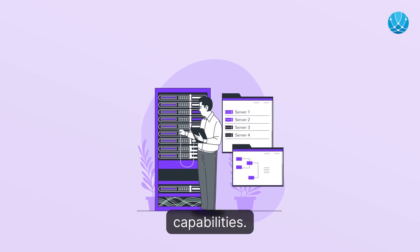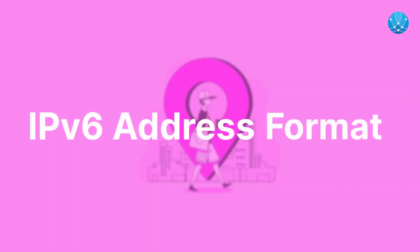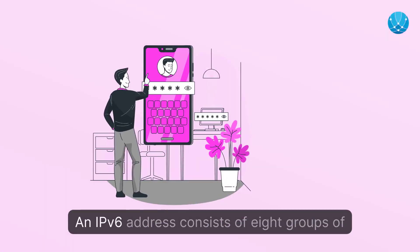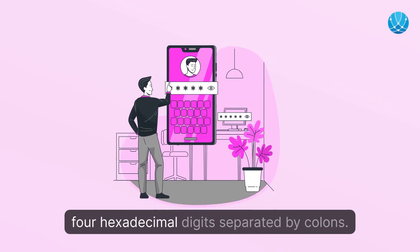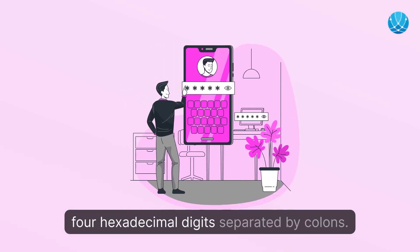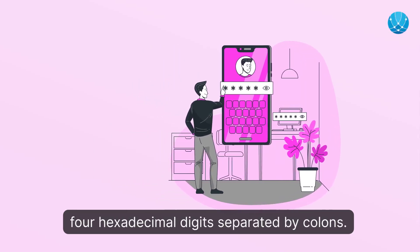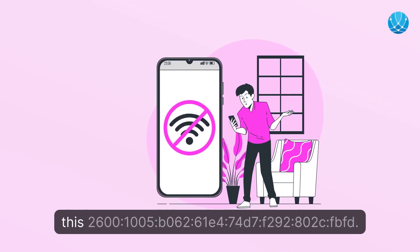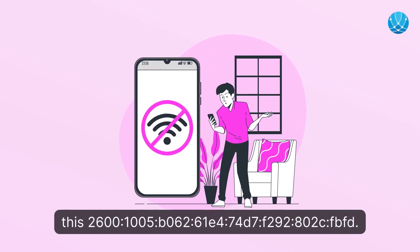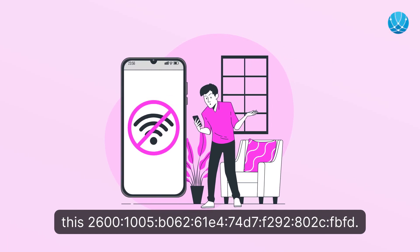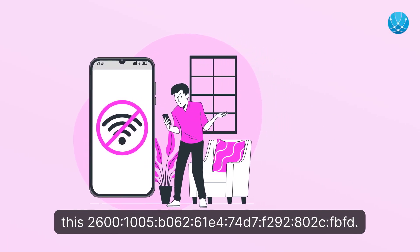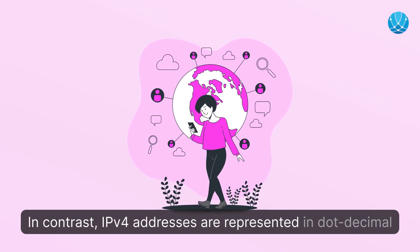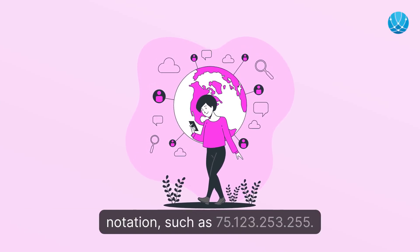An IPv6 address consists of eight groups of four hexadecimal digits separated by colons. In contrast, IPv4 addresses are represented in dot-decimal notation.